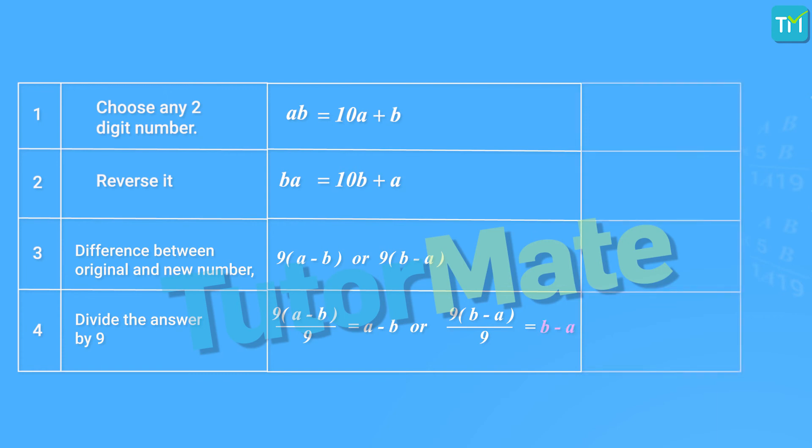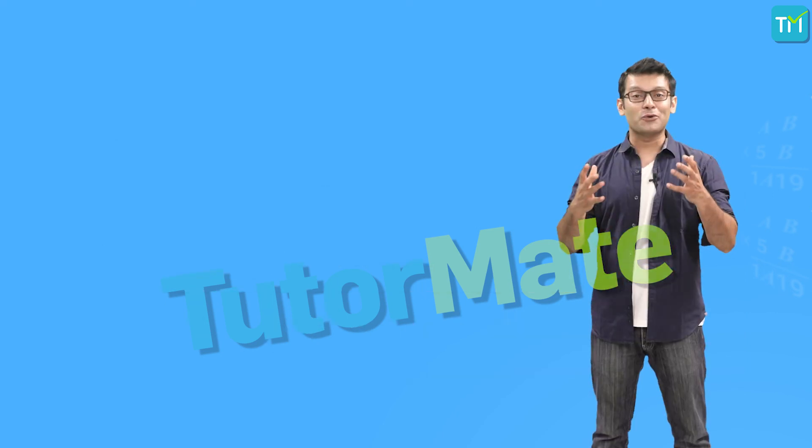Let's verify this with our number 51. When we reverse the number, it becomes 15. Now, 51 is greater than 15. So, the difference is 51 minus 15, which is equal to 36. On dividing 36 by 9, we get the remainder as 0 and the quotient is 4, which is also the difference between the digits that is 5 minus 1 is equal to 4. How cool is that?